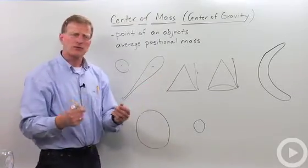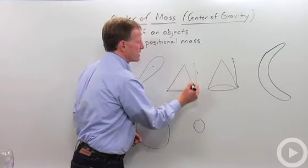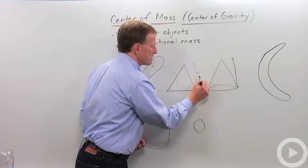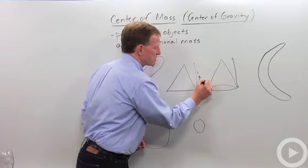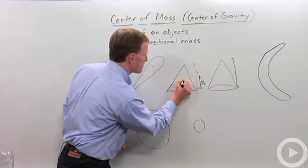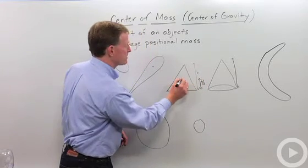For a triangle, remember in geometry, the center of mass, if I have the height of the triangle as H, it's going to be H divided by 3, which will put it—made it a little too big there. H divided by 3 would probably be right about there.